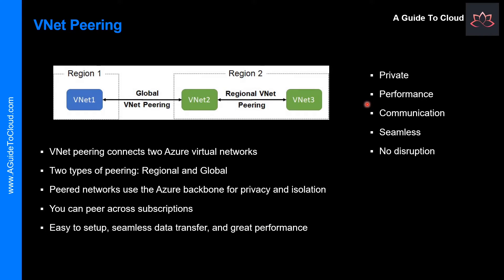Another benefit is Performance — a low latency, high bandwidth connection between resources in different Virtual Networks. Another benefit is Communication — the ability for resources in one Virtual Network to communicate with resources in a different Virtual Network once they are peered. VNet Peering is also seamless, enabling you to transfer data across Azure subscriptions, deployment models, and across Azure regions. Finally, there is no downtime to resources in either Virtual Network when creating the peering or after the peering is created.